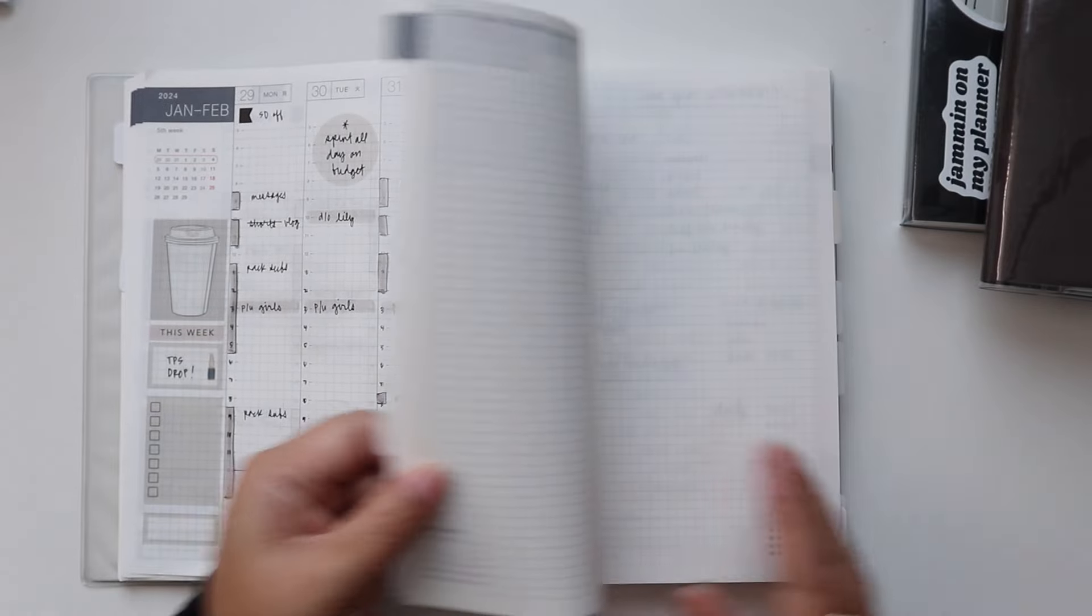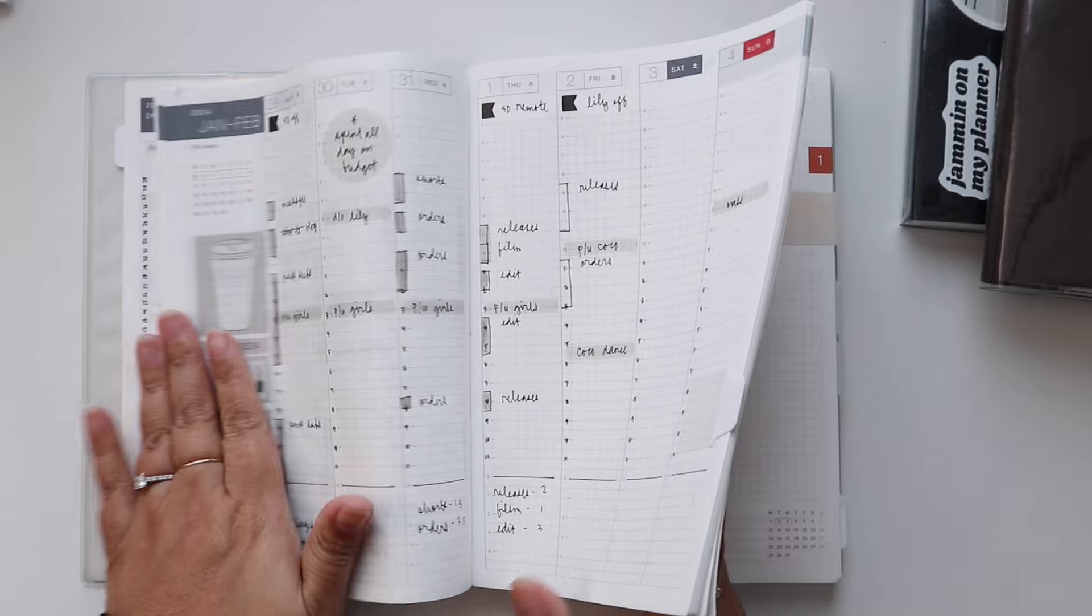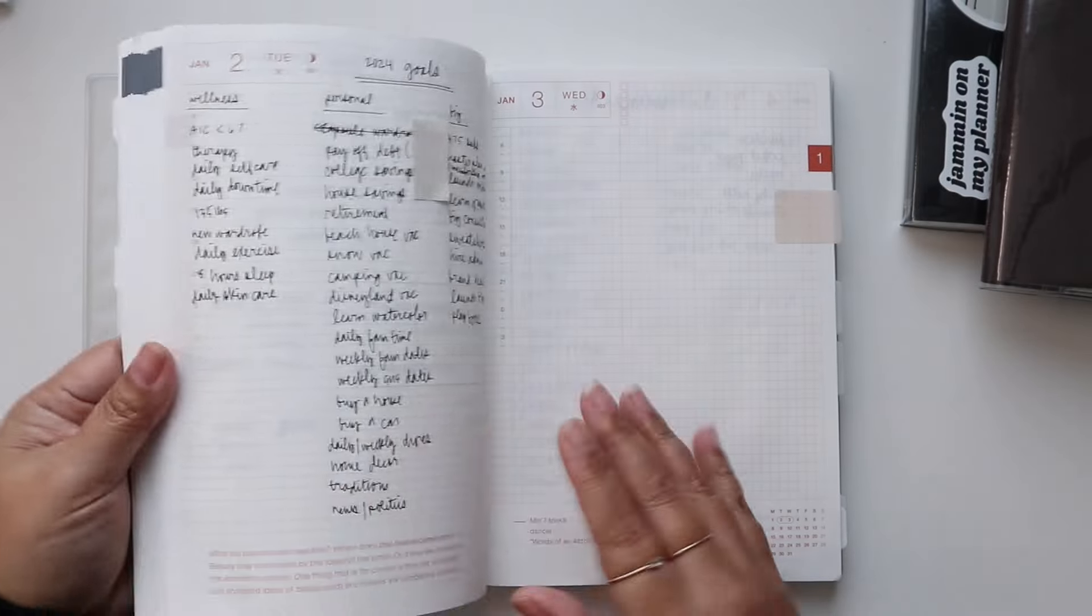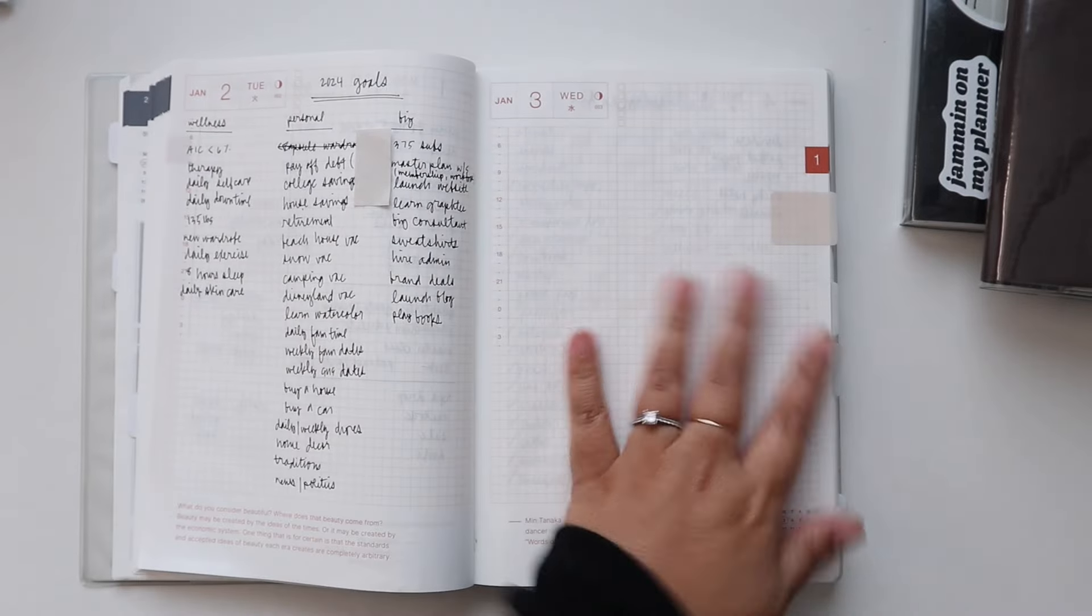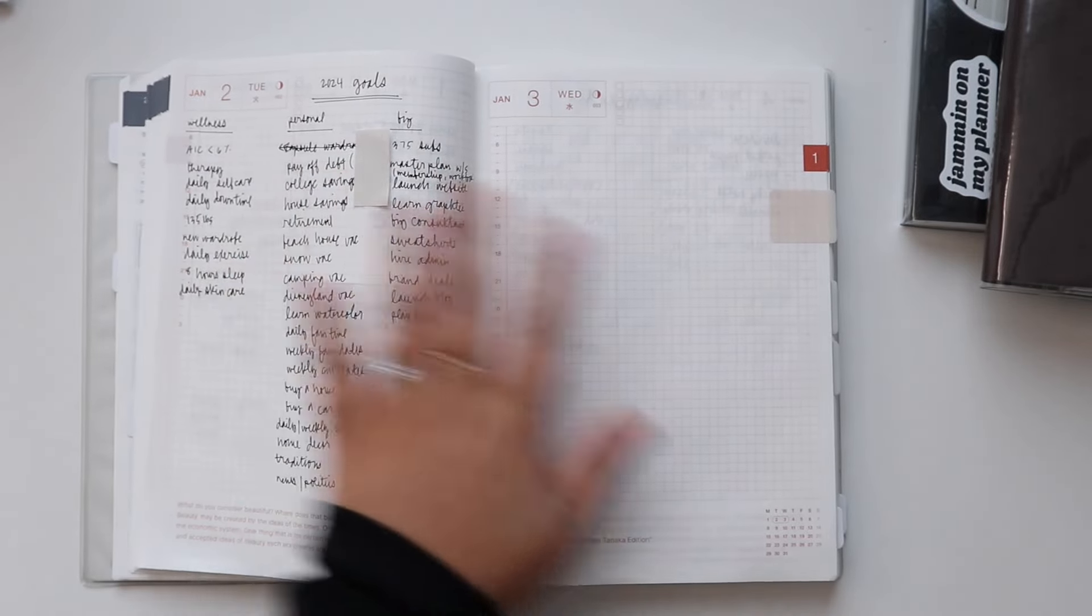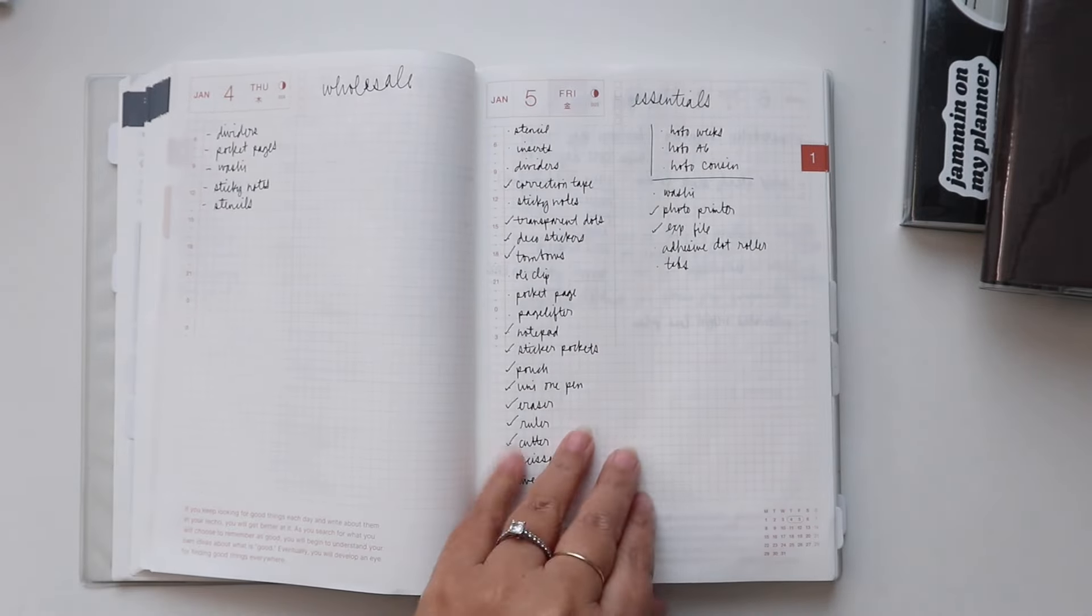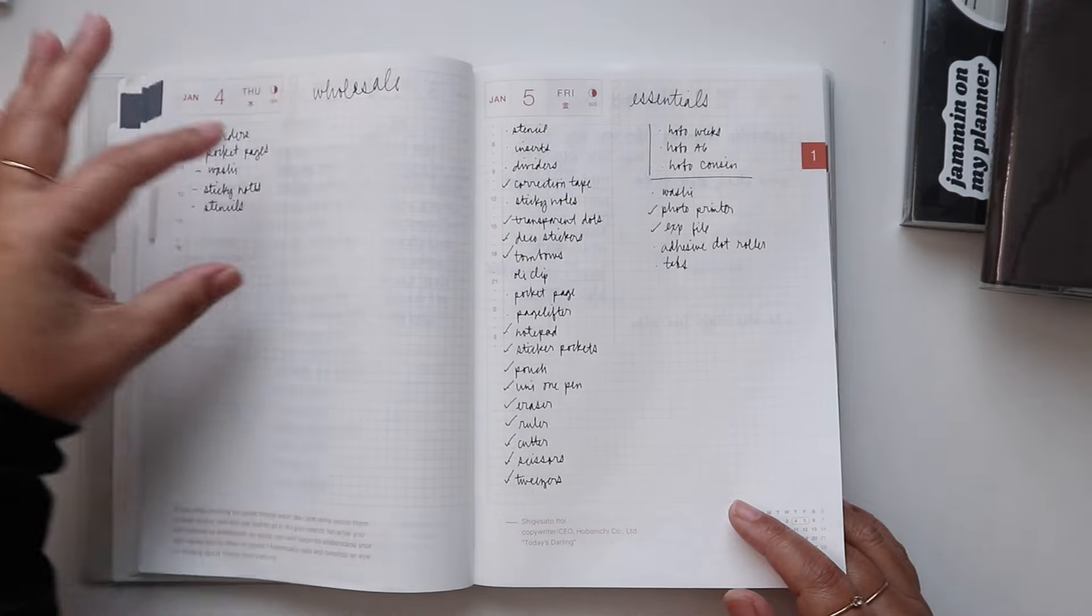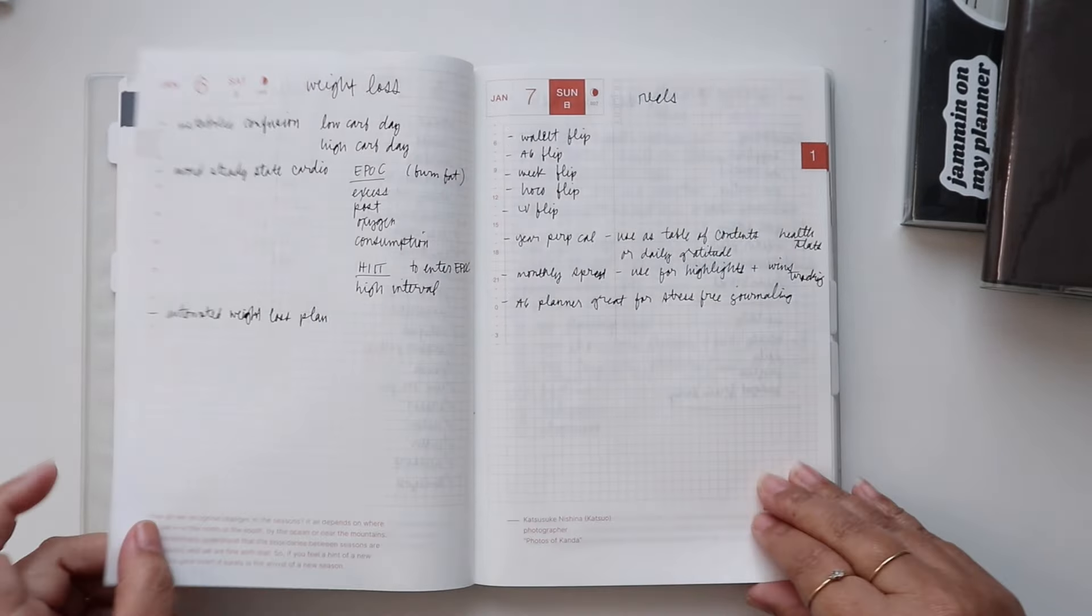And then here's my daily pages. So this is what I was talking about here in my perpetual calendar. I thought I'd just do a quick little flip through to see how it's going. I left this page blank because this whole spread is for my 2024 goals so I'm still working on those. And then sometimes it's just a quick little list and I don't fill out the page and again I'm trying to be okay with that.